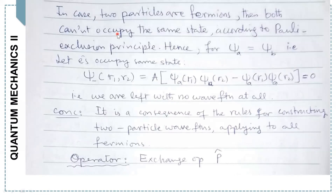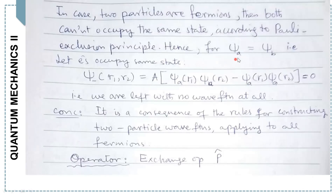If we have a case in which two particles are fermions, then both cannot occupy the same state. This is simply according to the Pauli exclusion principle. In the case when ψ_A = ψ_B, the expression becomes ψ−(r₁,r₂) = A[ψ_A(r₁)ψ_A(r₂) − ψ_A(r₁)ψ_A(r₂)] = 0. We are simply left with no wave function at all. This is the consequence of the rules for constructing two-particle wave functions whenever we apply them for fermions.